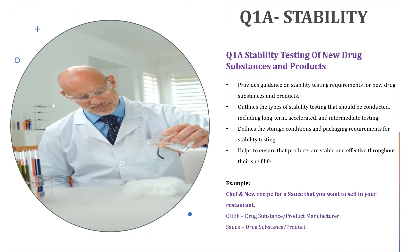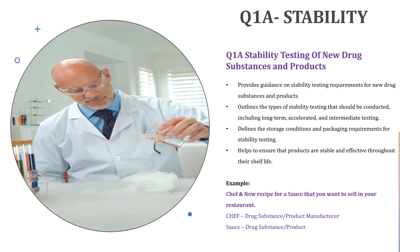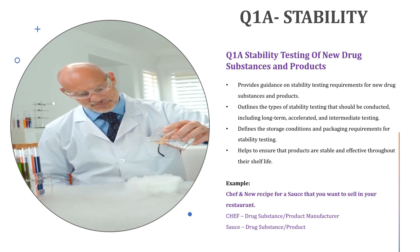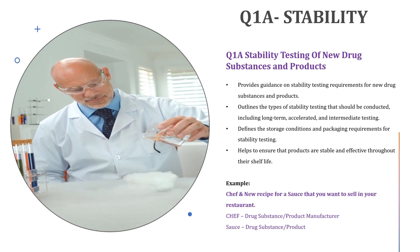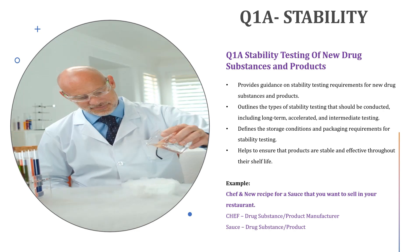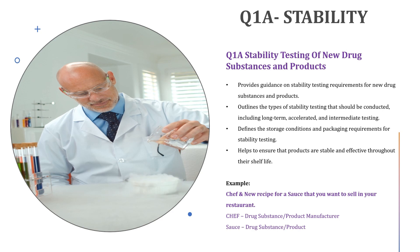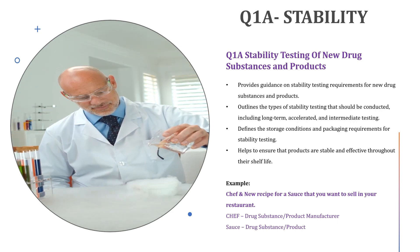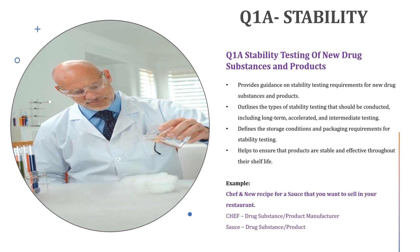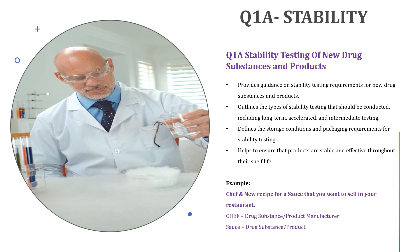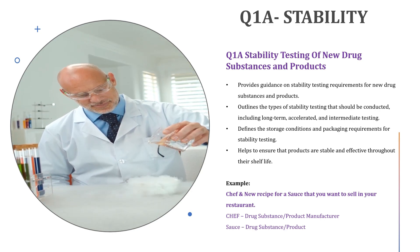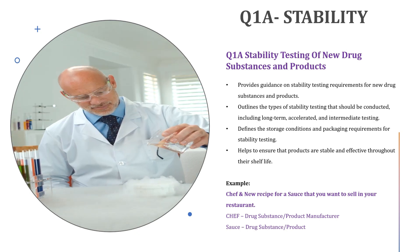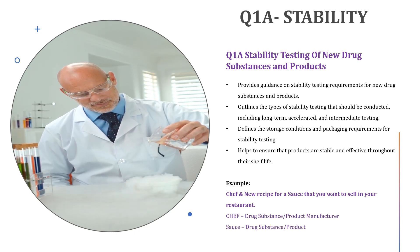The next important section is ICH Q1A stability guidelines. Imagine you are a chef who has created a new sauce recipe — the sauce being referred to as new drug substances and new drug products. The ICH Q1A stability testing guidelines provide instructions for testing your sauce's shelf life and storage conditions. You subject your sauce to different environments like temperature and humidity to see how it reacts. The guidelines cover different packaging types and provide guidance on statistical analysis and interpretation of stability data, ensuring your product remains safe over its intended shelf life.